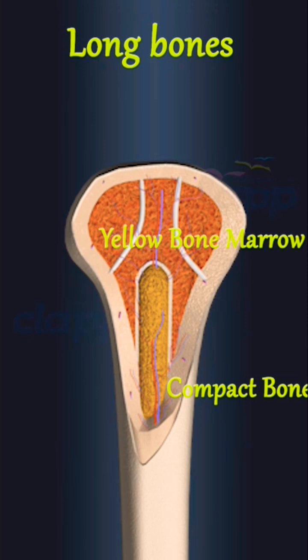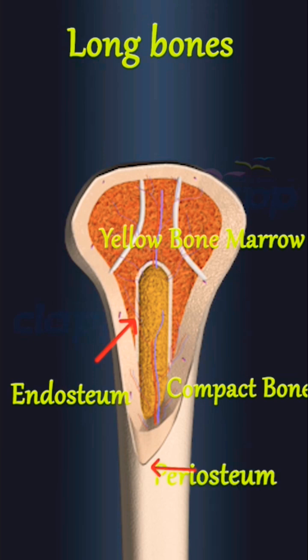Lining inside the bone adjacent to the medullary cavity is a layer of bone cells called the endosteum. On the outside of bones, there is another layer of bone cells called the periosteum.